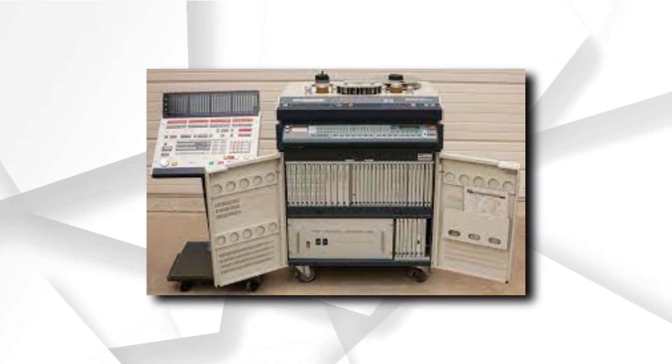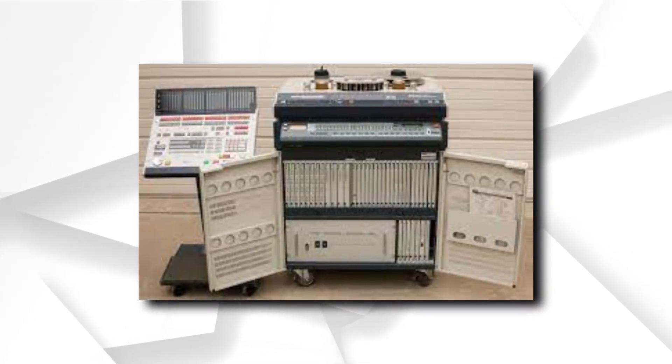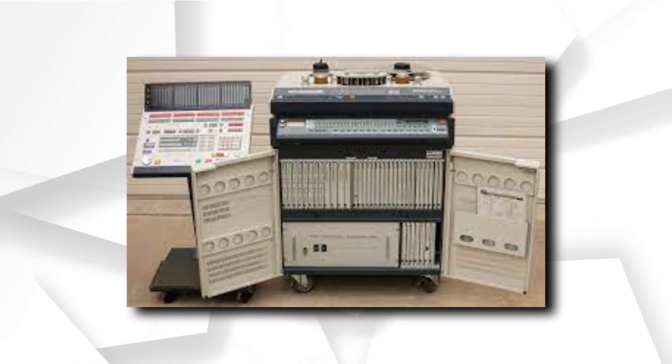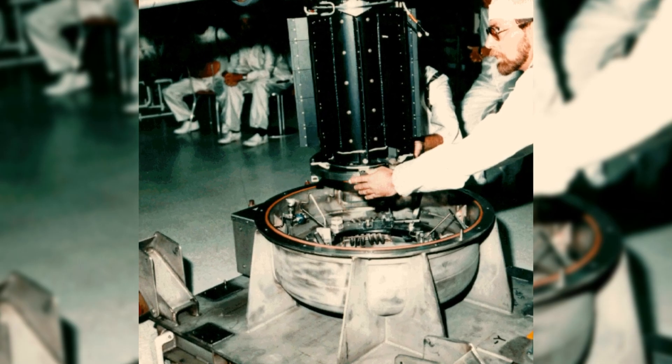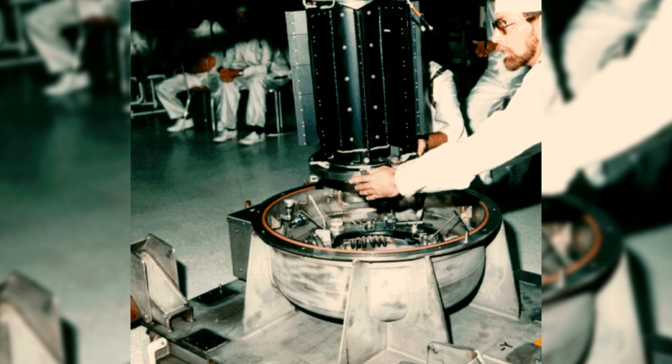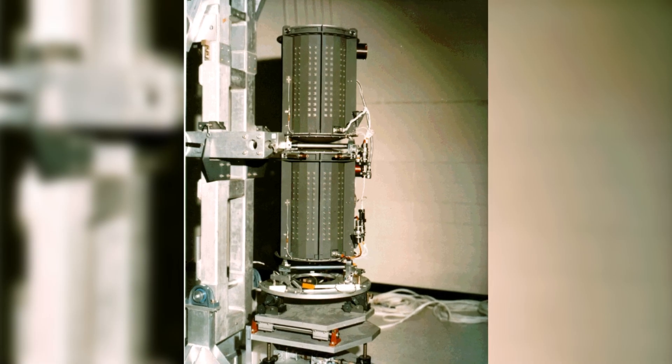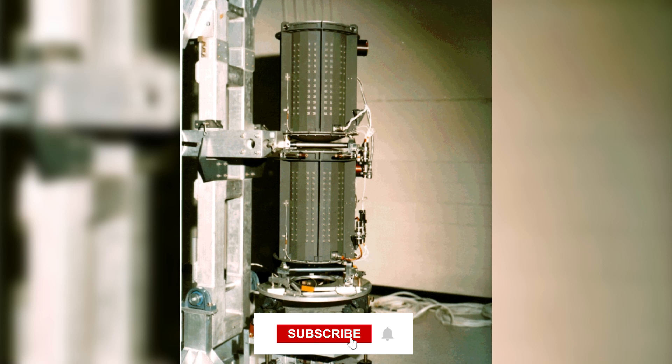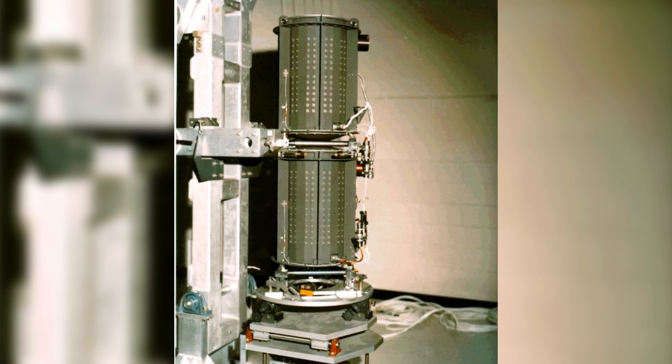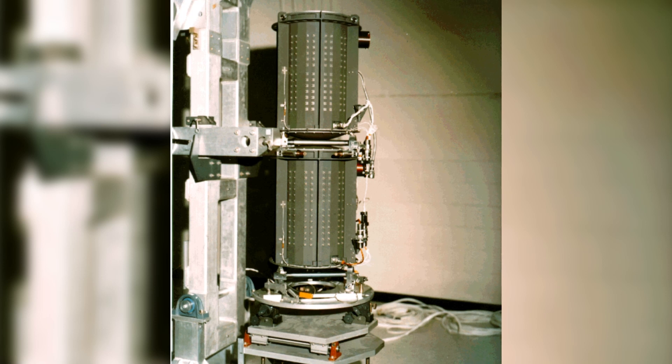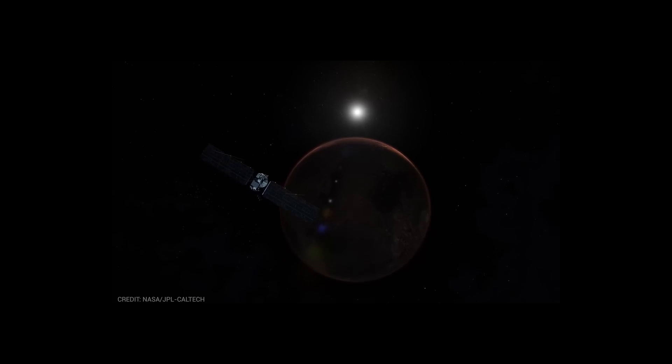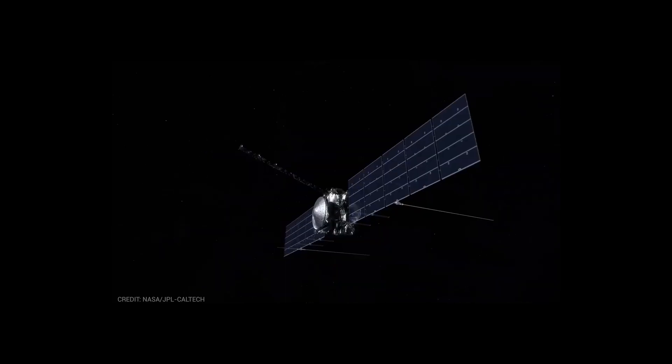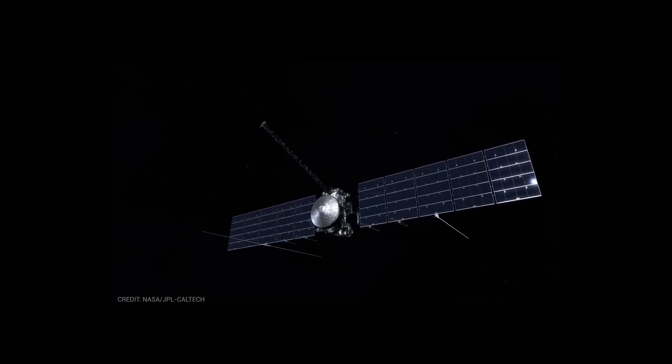Spacecraft design: In order to keep the high-gain antenna pointed towards Earth, Voyager 2 was built by the Jet Propulsion Laboratory, JPL, and equipped with 16 hydrazine thrusters, three-axis stabilization gyroscopes, and celestial referencing instruments including Sun sensor, Canopus star tracker. The attitude and articulation control subsystem, AACS, also includes eight backup thrusters and redundant units of the majority of the instruments.